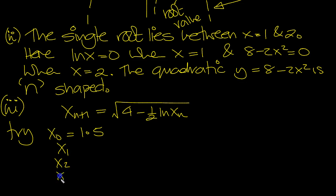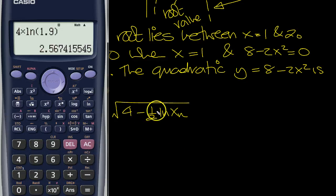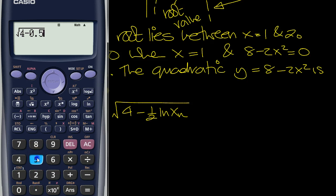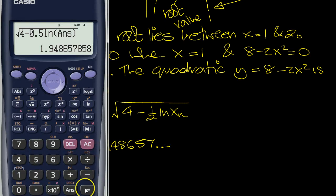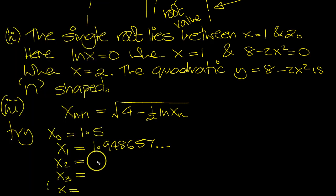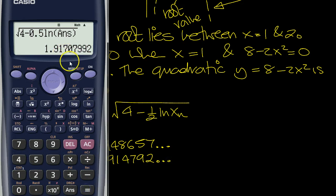Then we want x_1, x_2, x_3, and so on. We need to do it to 3 decimal places. So it's 4 minus—1.5 first of all in the calculator. Then we do √(4 - 0.5 ln x), log of answer. Press equals: 1.948657. Press equals again: 1.914792. Next one: 1.917079.